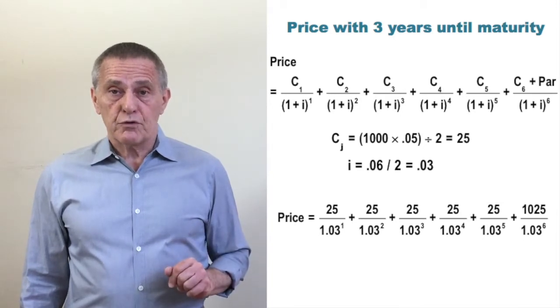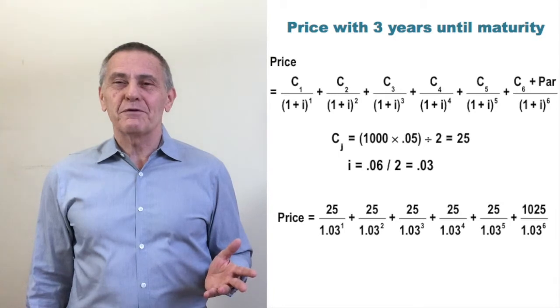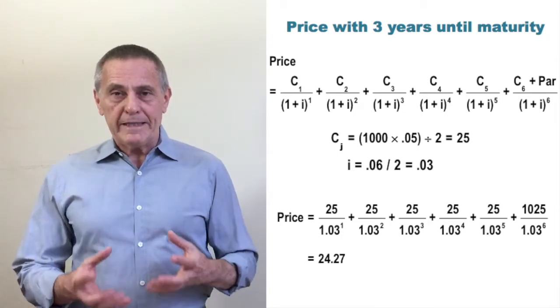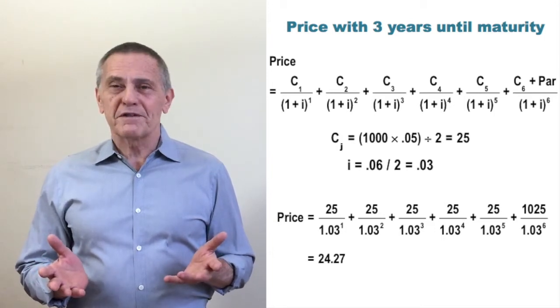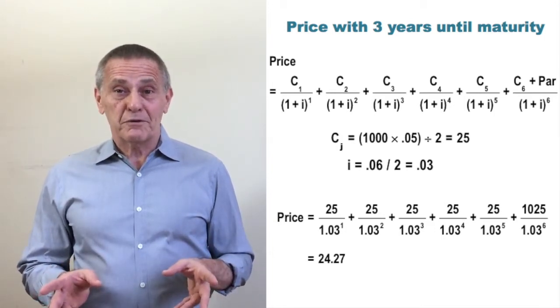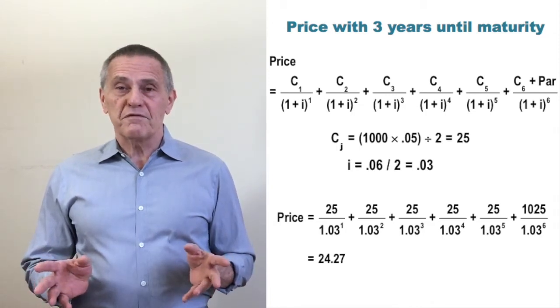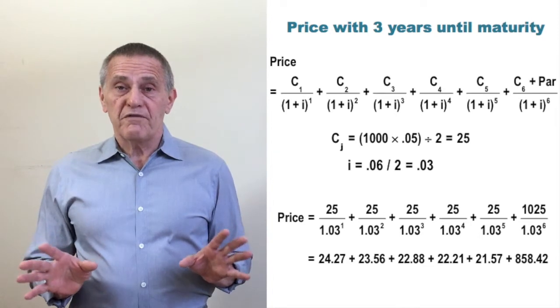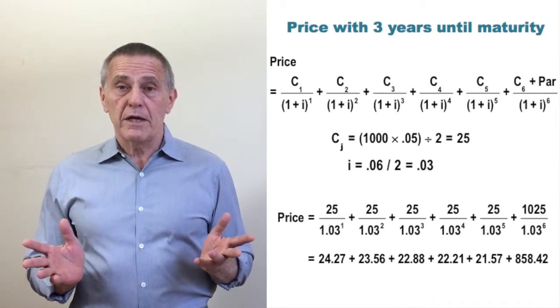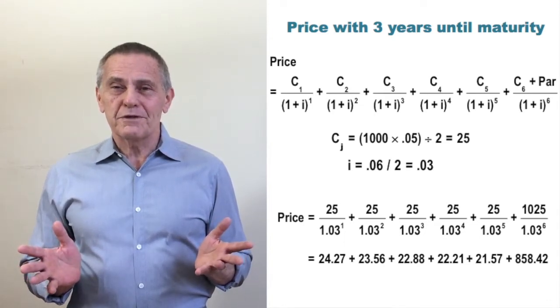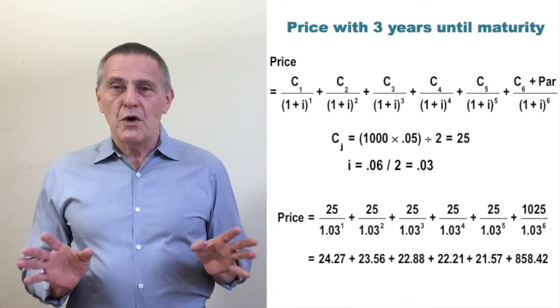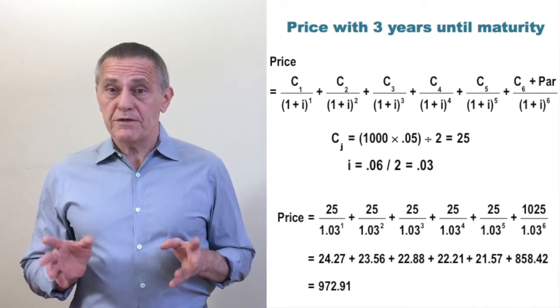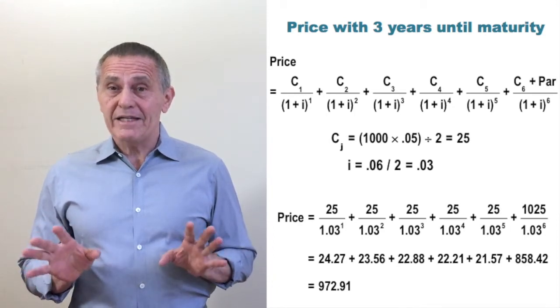So, if you take the first $25 coupon and discount by 1.03, that gives a present value of $24.27. Yes, the coupon is $25, but it's $25 six months in the future, discounted back to the present value is where the $24.27 comes from. The second $25 coupon is discounted by 1.03 squared, that gives us a present value of $23.56. And so forth all the way out to the final cash flow, the $1,025 due at maturity divided by 1.03 to the sixth. That gives a present value of $858.42. So by summing the present value of the individual cash flows, we get a market price of $972.91. So that dollar amount is the present value of the future cash flows and is the market price of that bond.